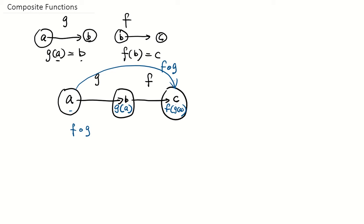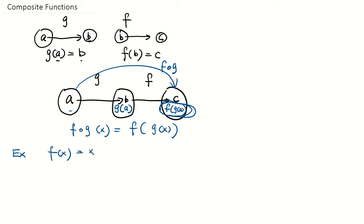We call it f of g, and f of g of x is equal to f of g of x. This is the definition of a composite function. So now let's give a more specific example. Say we have two functions: f of x equals x plus 1, and g of x equals x squared. What if I want to find f of g of 2, for example?